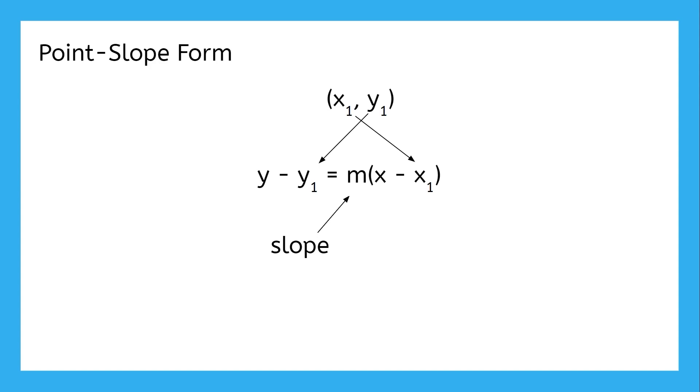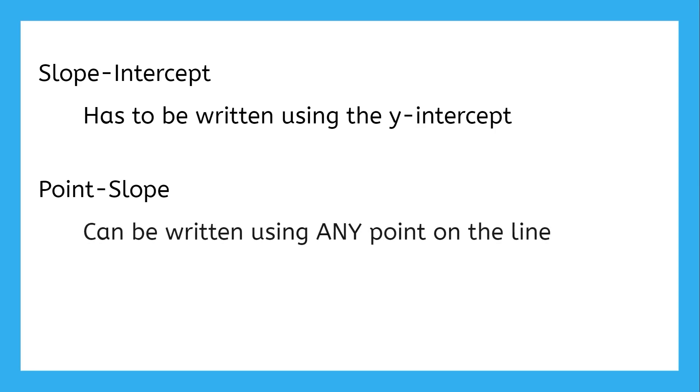That right there is the reason point-slope form is so useful. With slope-intercept form, it has to be written using a specific point, the y-intercept, and if it hasn't been given to you, you'll have to go through the trouble of solving for it. But with point-slope form, on the other hand, you can write it using any point on the line. That even includes the y-intercept point, so any equation you could write in slope-intercept form will be even easier to write in point-slope.